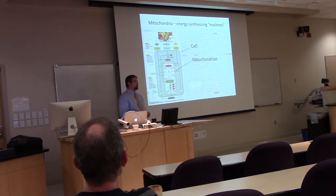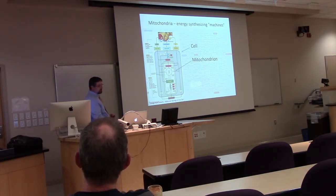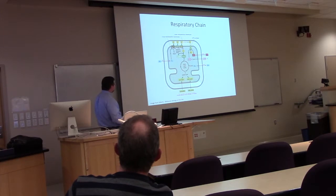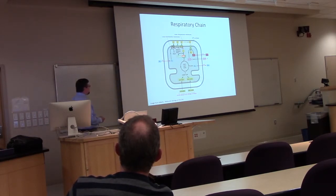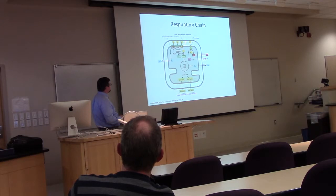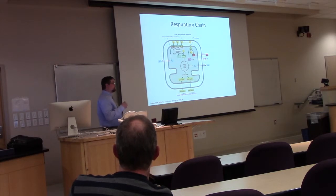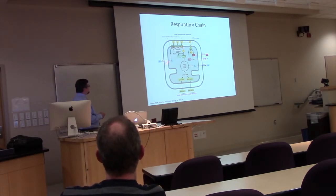Every day you convert approximately your body weight in ATP — that's how much ATP your mitochondria are churning out constantly. Through metabolism, you get powerful reducing compounds like NADH and FADH2 that store a lot of potential energy. The respiratory complex on the inner membrane shuttles electrons from these reduced agents through the complex, releasing potential energy and driving protons across the membrane, setting up a large voltage difference. Eventually these electrons are passed to the final acceptor — molecular oxygen — turning it into water. This process is called respiration.